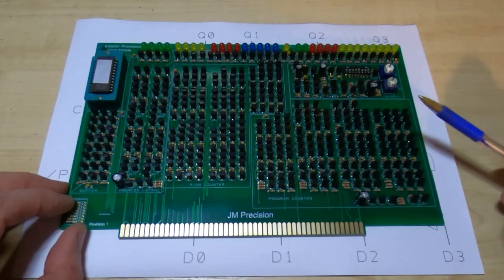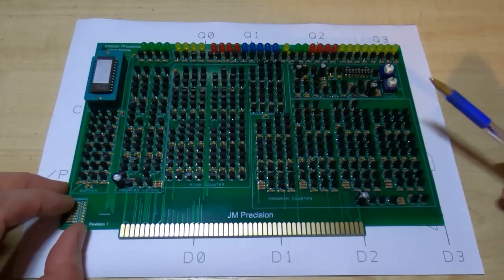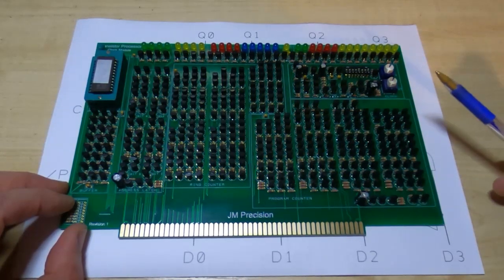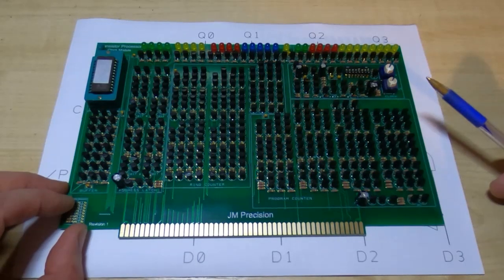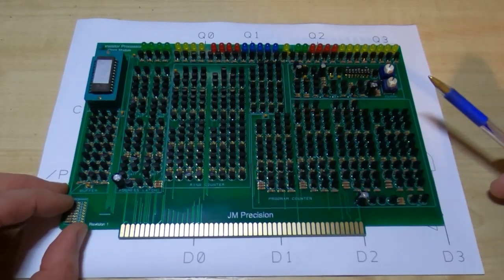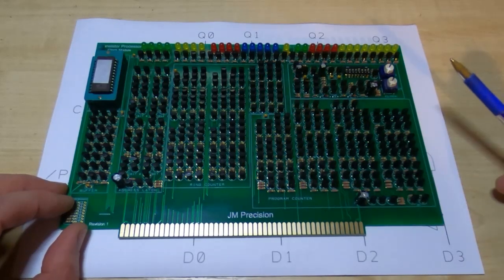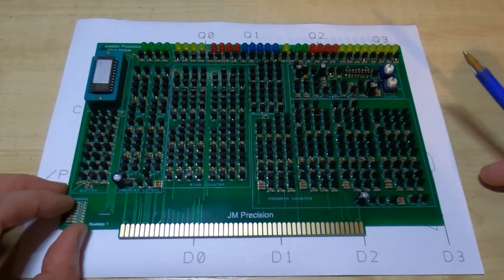In this version it will do the same thing. It will start at zero and count up. It will wrap around when it gets to the maximum count. It can be cleared but it can also be loaded with any value we want from the data bus. Now those requirements make it significantly more complicated than the simple program counter that was in the original processor.